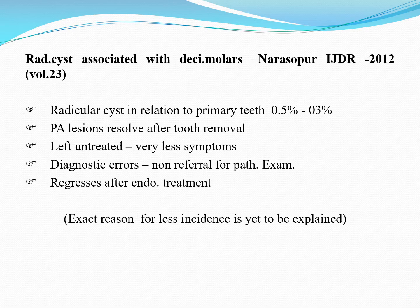The radicular cyst is most common in the permanent teeth compared to the deciduous teeth. It may occur in primary teeth also, but in primary teeth, if any abnormality or pain occurs, the tooth is usually removed. Once the tooth is removed, any periapical or radicular cyst typically resolves.